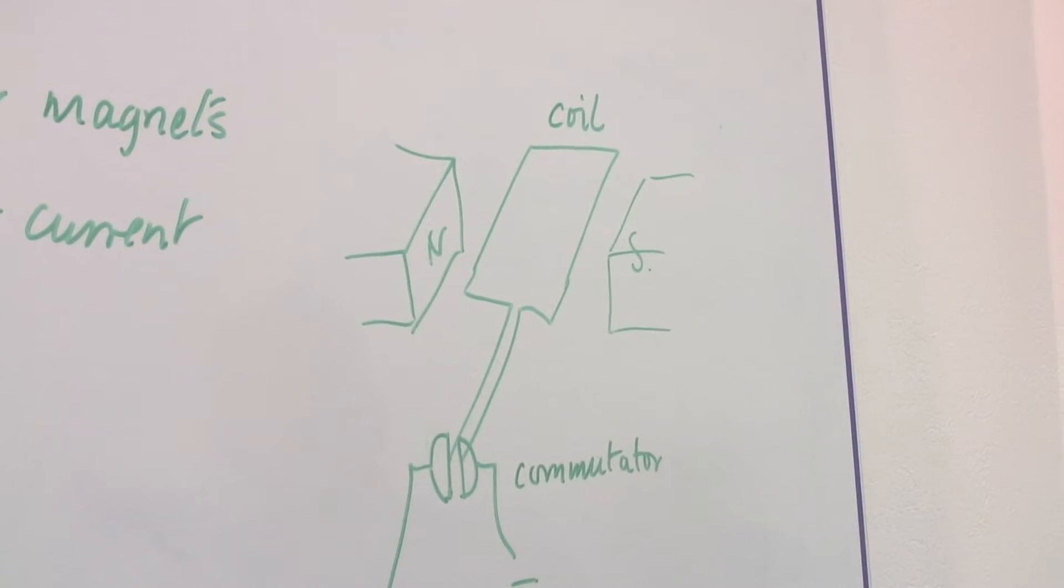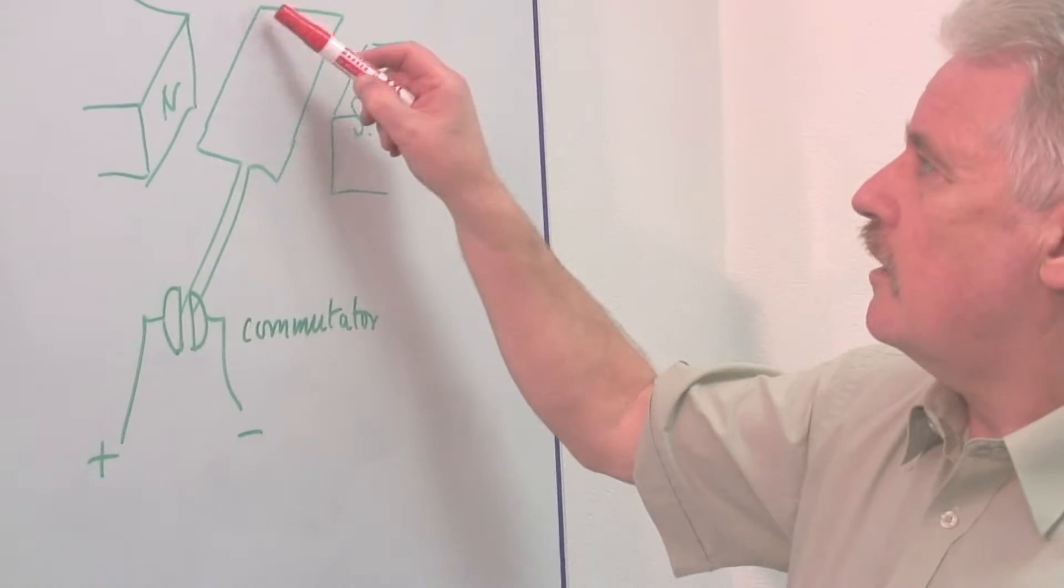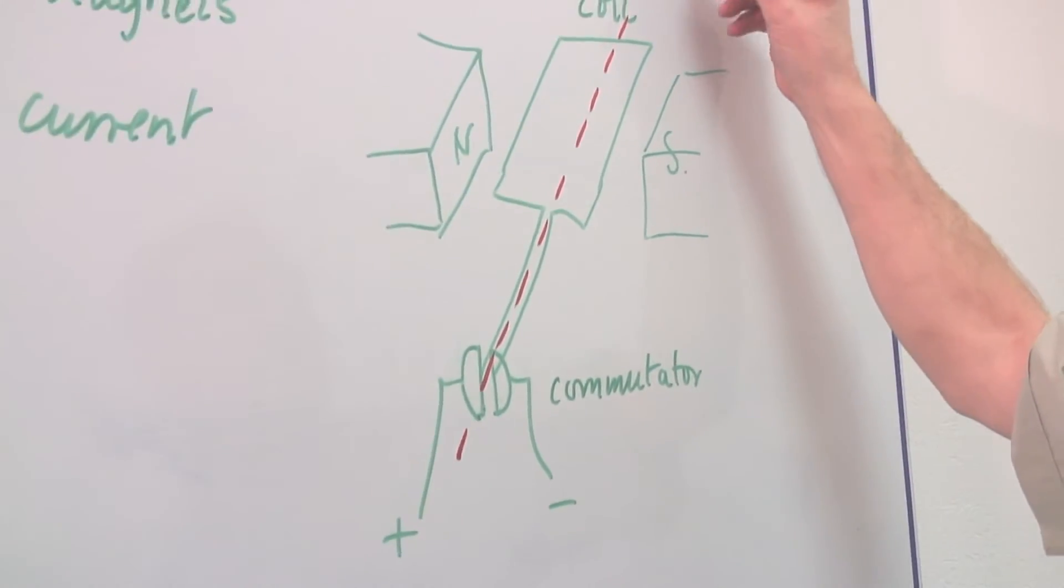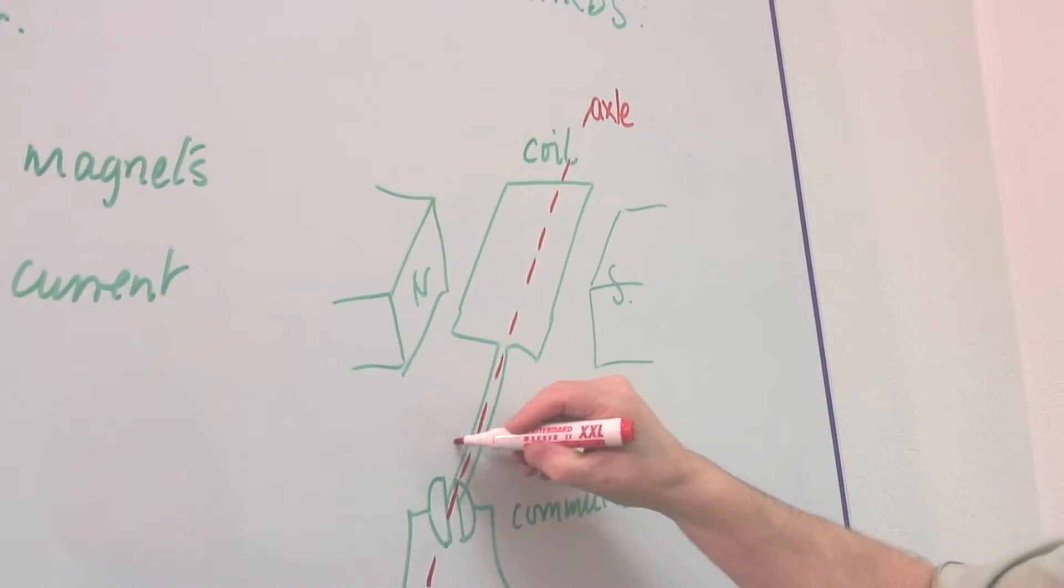The other controlling factor is the current going through this coil. This is the motor and there's the axle of the motor so this rotates.